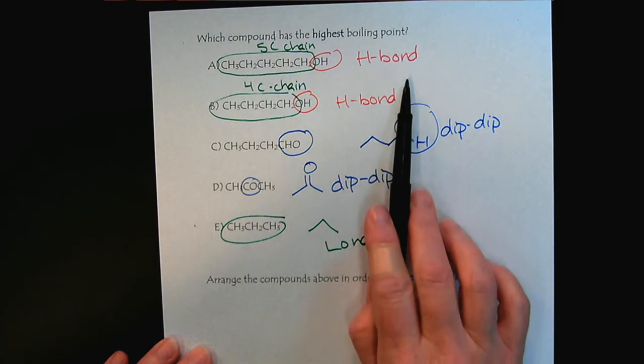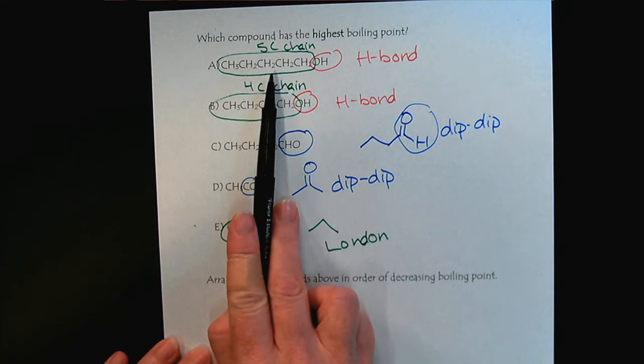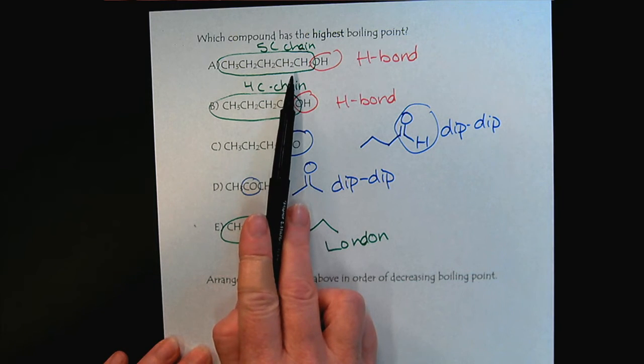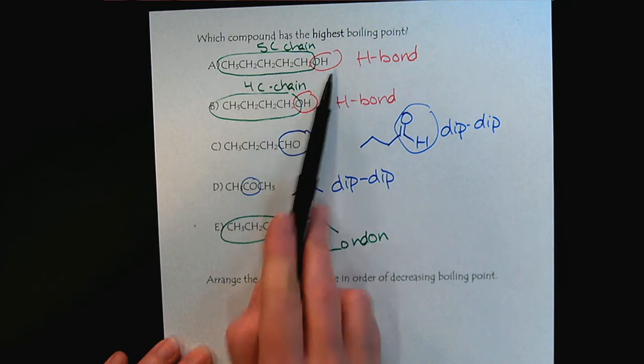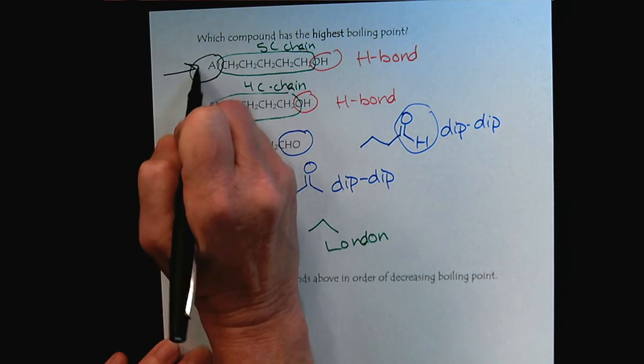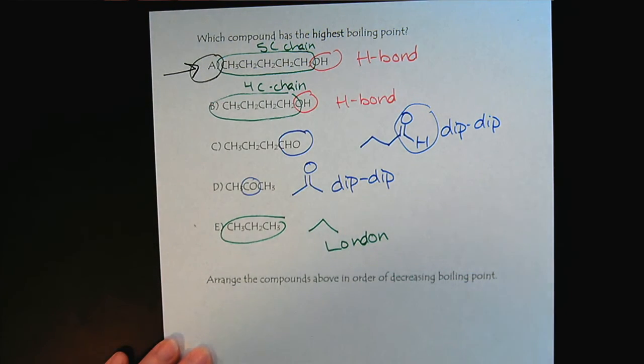It's going to come down to the two H-bonders. And compound A, the 1-pentanol, has the most surface area with the H-bonding. So the correct answer to this question would be A.